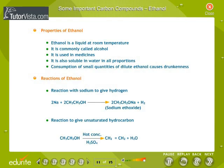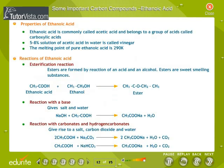Some important carbon compounds. Ethanol: some important properties and reactions of ethanol are outlined here. Ethanoic acid: some important properties and reactions of ethanoic acid are outlined here. Read through to understand.